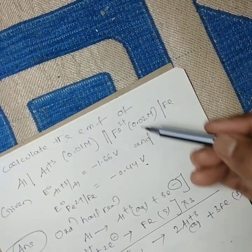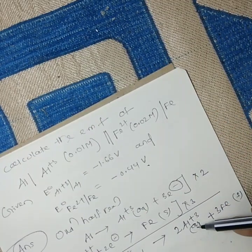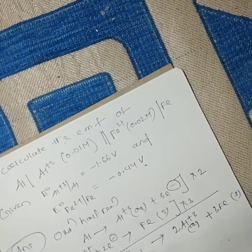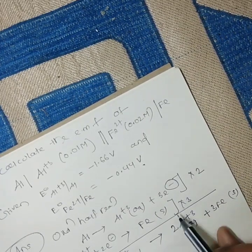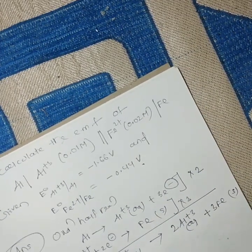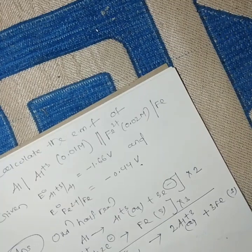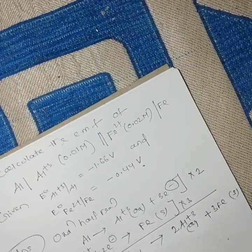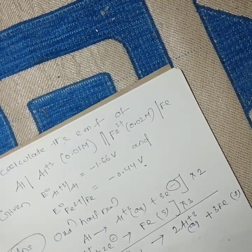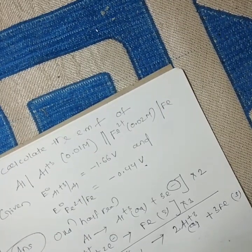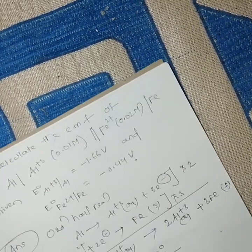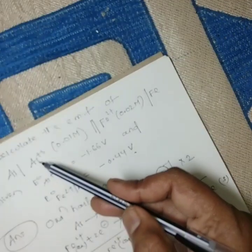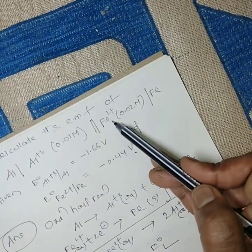This is the entire cell reaction. From this we conclude that 6 electrons are involved in the total process. E°cell = E°R − E°L. It is clear that aluminum undergoes oxidation and ferrous ion undergoes reduction.